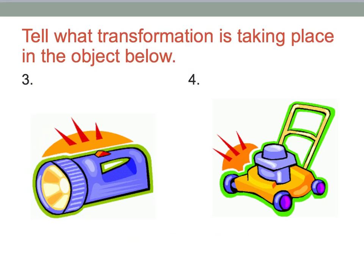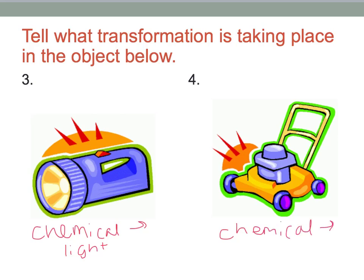Now we have a flashlight. A flashlight needs something to run — a battery. Batteries are chemical energy, so to have the light turn on, you start with chemical energy and end up with light. For the lawnmower, lawnmowers typically need gasoline, which is chemical energy. When you turn on the lawnmower, there's a blade inside that spins around — that deals with motion, or mechanical energy. So chemical converts to mechanical.